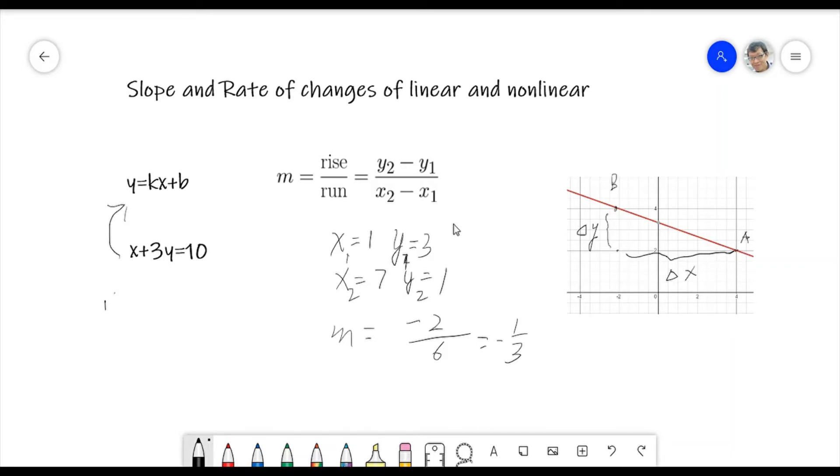Another way, let's just find the K. So writing 3Y equals to 10 minus X. Divided by three, negative one over three X. So the coefficient of X is negative one over three. Same.